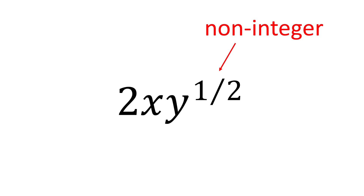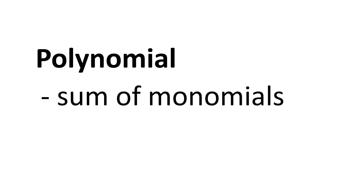Now that we know what is a monomial, we can define what is a polynomial. A polynomial is a sum of monomials.